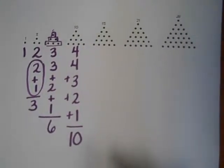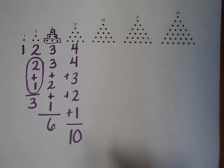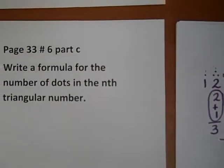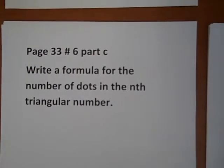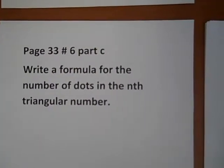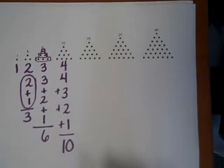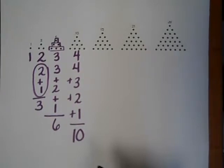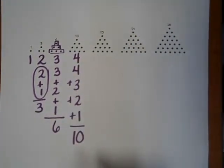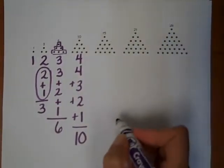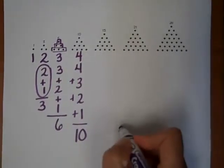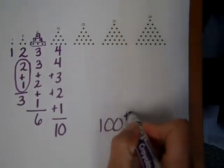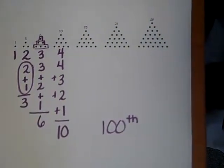Our job is to write a formula for the number of dots in the nth triangular number. So in order to do this we want to start with an example that would be really hard to do without just adding them up. So let's just try for the one hundredth triangular number.